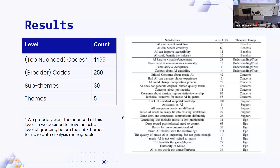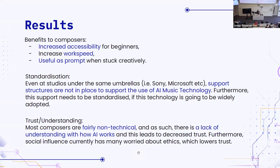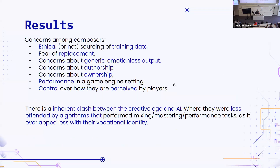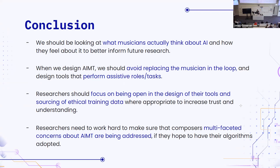There's also an inherent clash between the creative ego and AI as a whole. When I asked composers about a melody generator, they got very upset and said it's not something a machine can do. But if I asked about a bass guitar generator, they were largely unbothered — their vocational identity isn't tied up in bass guitar. And when I asked about mixing, mastering, or a performance algorithm, they said 'sell it to me now' — they just didn't care.